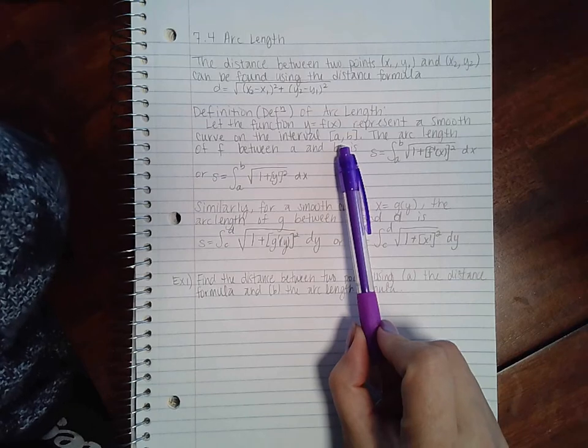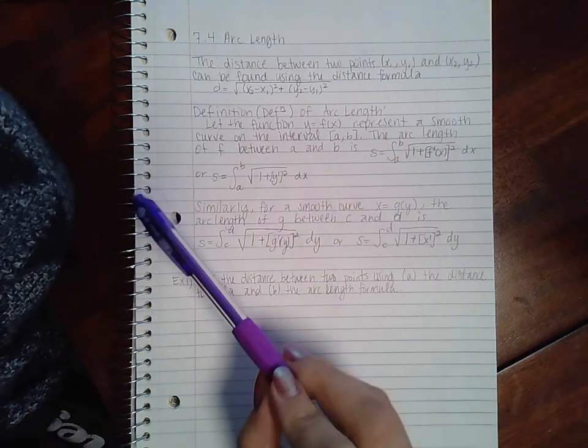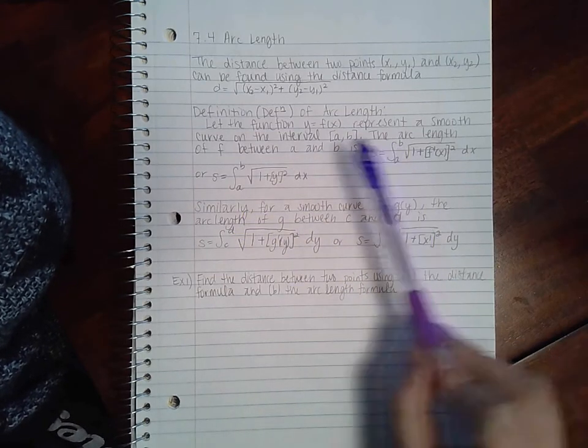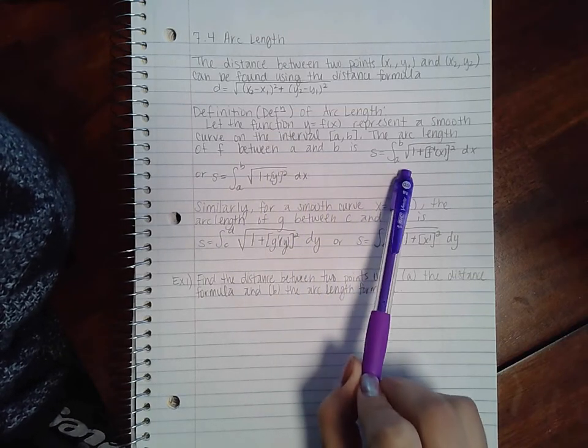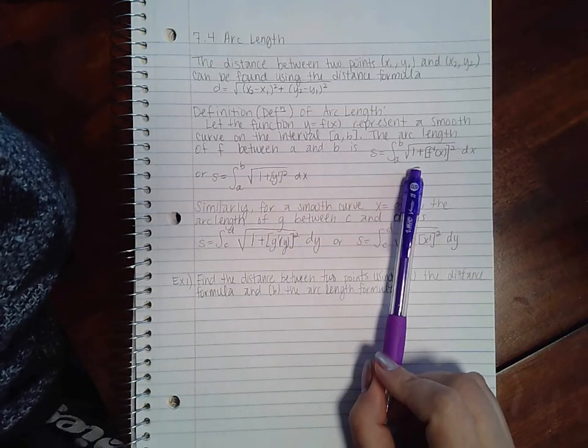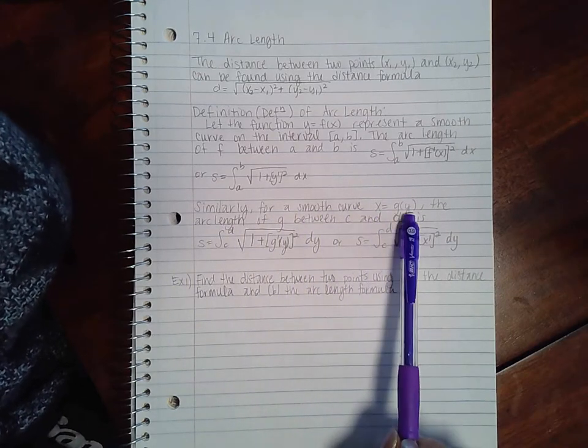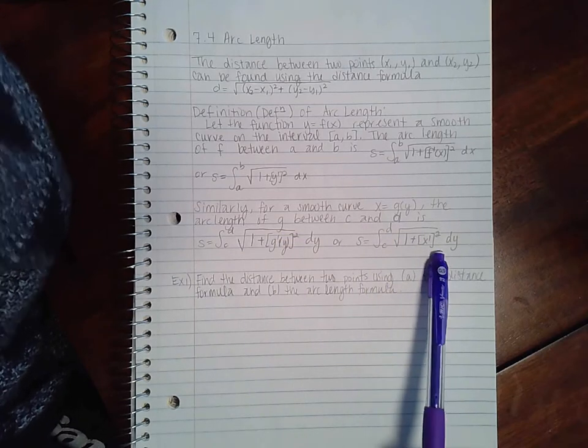On a closed interval [a, b], the arc length, basically the length between a and b but along a curve instead of just a straight line, can be found using this formula. Similarly, for a smooth curve in terms of y, you can find the arc length using this formula here.